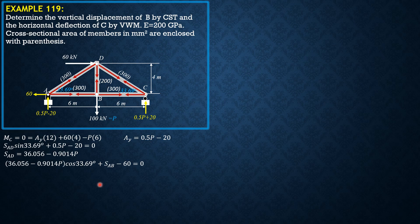And this SAB here, if you proceed to joint B, is equal to SBC by summing forces horizontal. So that is equal to SBC also. Summation forces Y: SBD is equal to P.